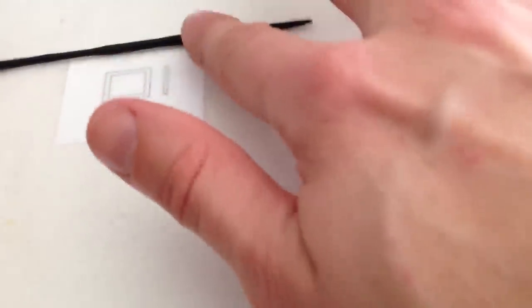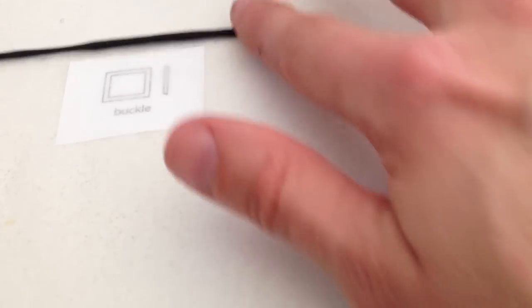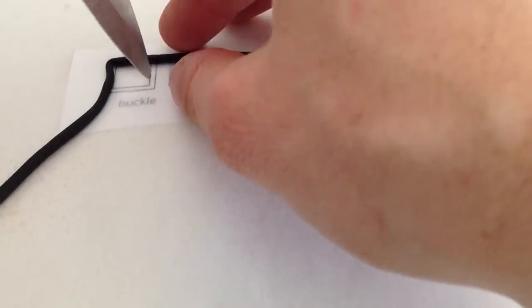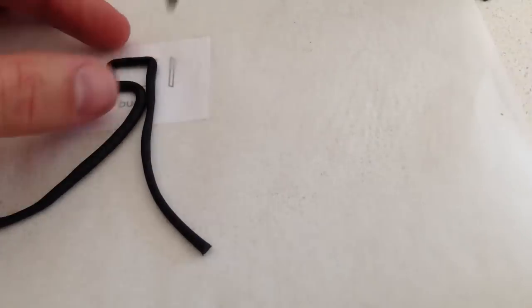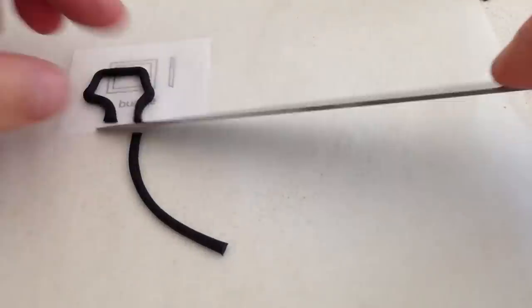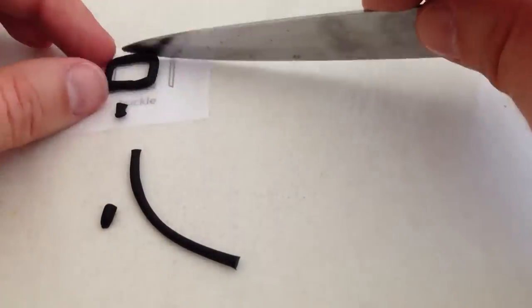Now to make the buckle, place some baking paper over your template and roll out a thin, even snake out of black fondant. Then using a knife to help you, bend it at the corners to match the outer size of the template, trim it to the right size, and join the two ends together in the middle of one of the sides.